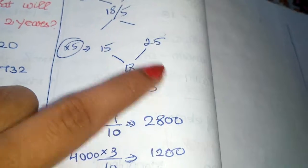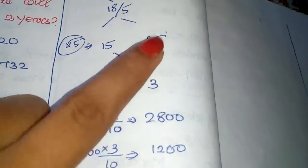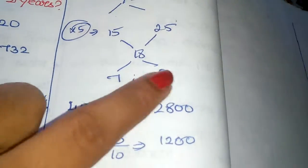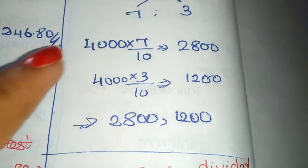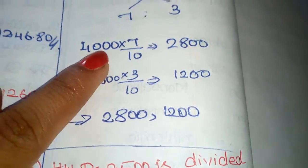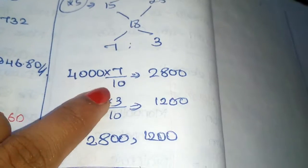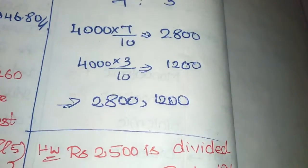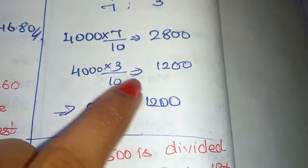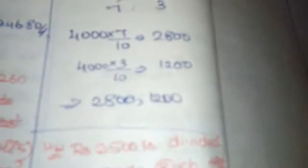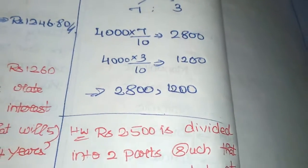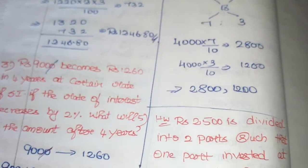Allegation gives: 15 minus 18 = 3 and 18 minus 10 = 7 (after multiplying by 5 to clear fractions), so ratio is 7:3. Total 10 parts = ₹4,000. So 7 parts = ₹2,800 and 3 parts = ₹1,200. Answer: ₹2,800 and ₹1,200. You can verify using the normal method too.